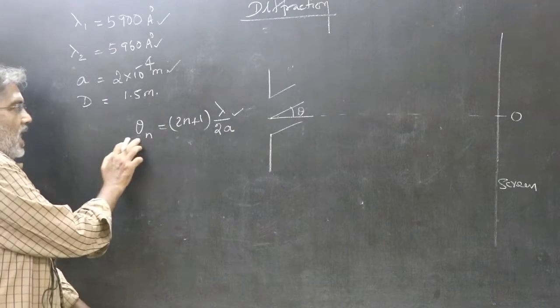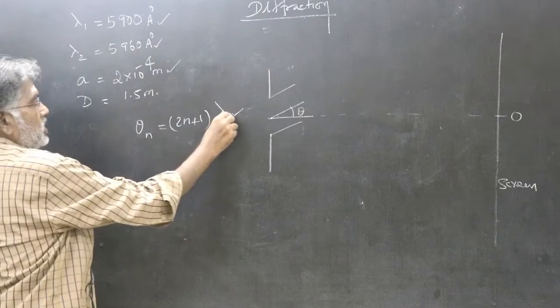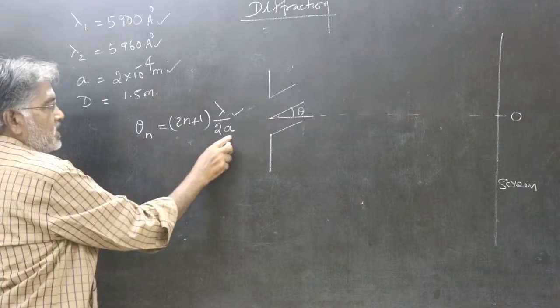Here, this is angular separation. For one wavelength you put lambda 1, second wavelength you put lambda 2, a is constant.